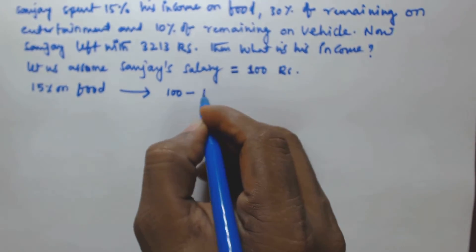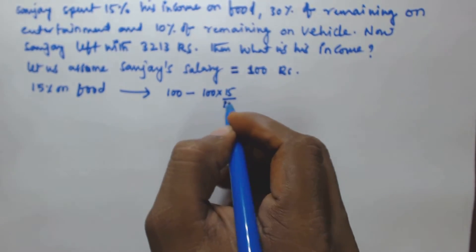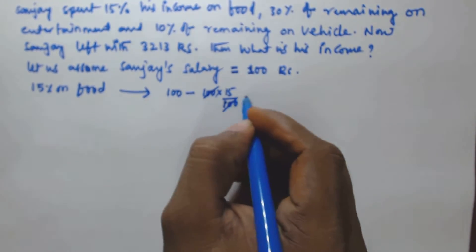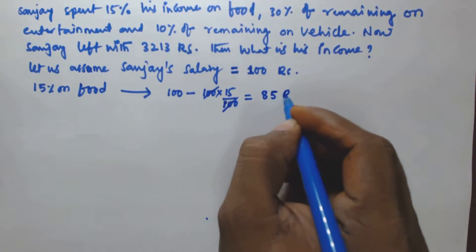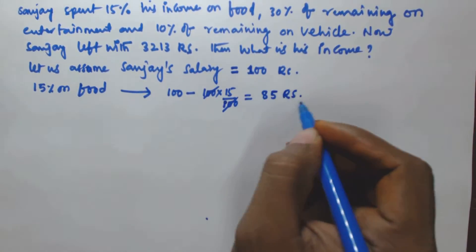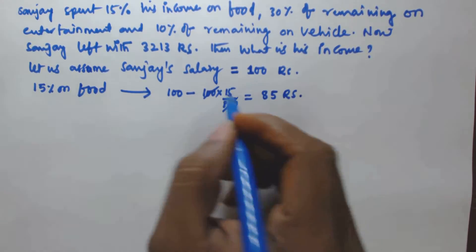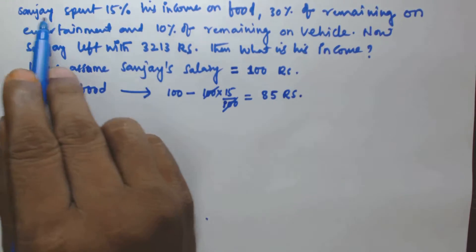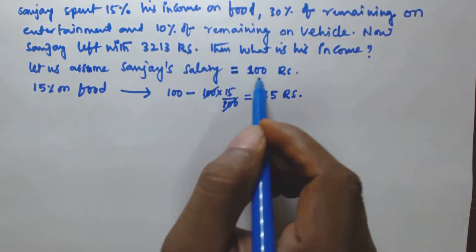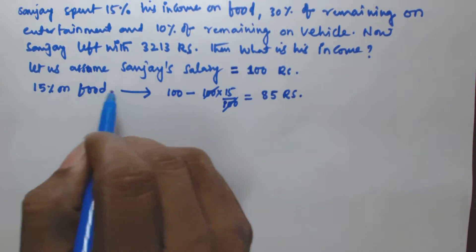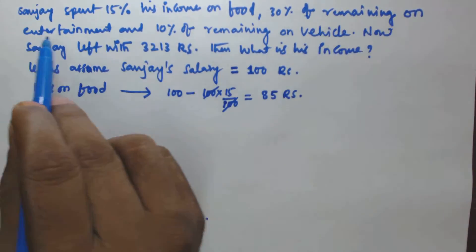100 minus 100 into 15 by 100 — the 100 cancels — so 100 minus 15 is equal to 85. So he left with ₹85. He spent 15% of his income of ₹100 on food, so ₹15 was spent on food and he left with ₹85.